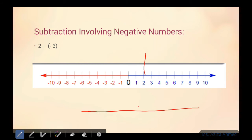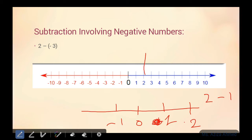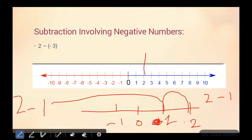Number line pe: zero, negative one, positive one, two. There is no need to write the plus sign. Agar mujhe number two mein se one ko minus karna hai, toh mein kya karti hoon? Backward jaana hai. Number line ke hum backward mein jaate hain jab remove karna hota hai. Toh number two se jab mein ne one ko minus kar diya, toh mere paas answer kya hai? Two minus one equals one. Number line bhi humne kya bataya? Answer kya hua? One.